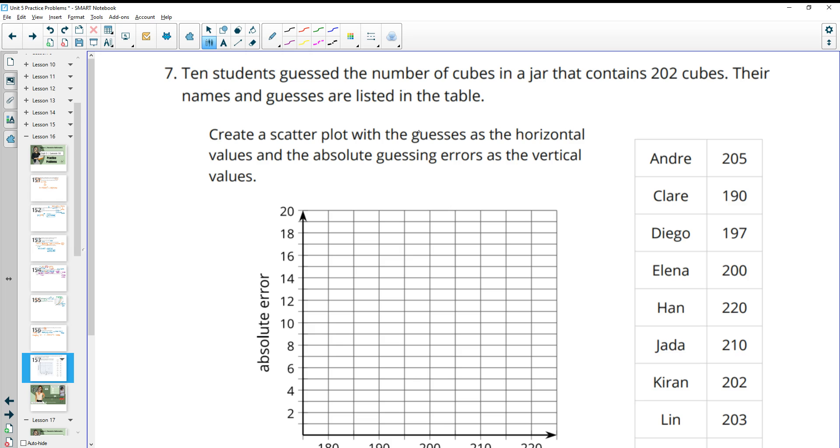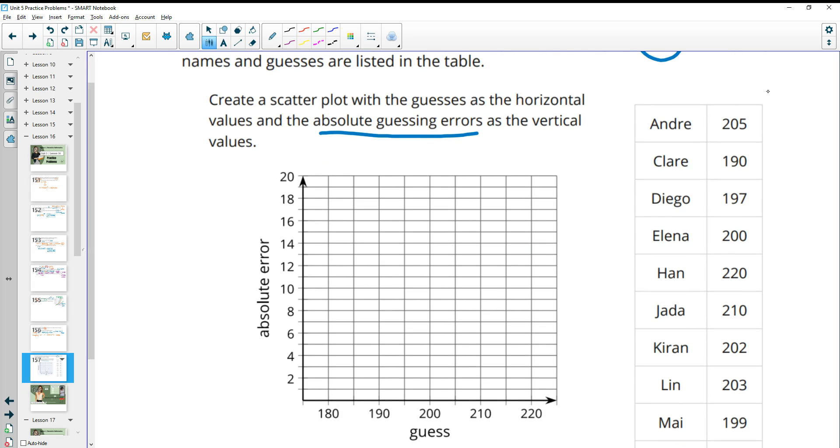Number 7, 10 students guessed the number of cubes in a jar that contained 202 cubes. Their names and guesses are listed in the table. Create a scatter plot with the guesses as the horizontal value and the absolute guessing errors as the vertical. So we need to come up with the absolute guessing error. I'm just going to call it AGE. And you do that by taking the number minus 202 or 202 minus the number. So really it's the absolute value of the guess minus 202.